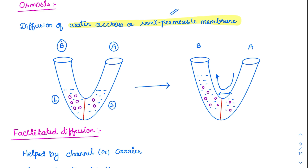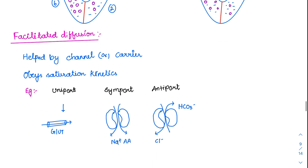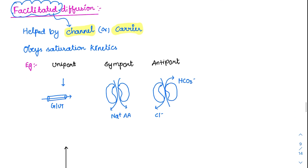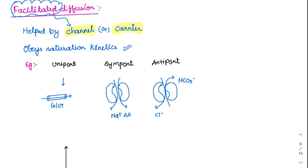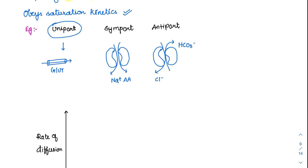This movement of water across a semi-permeable membrane is called osmosis. Facilitated diffusion is passive — facilitation means it is helped by channels or carriers, but no energy is needed. It obeys saturation kinetics. It is further classified into uniport (single molecule transported), symport (two or more molecules transported in the same direction), and antiport (movement in opposite directions), as seen in the chloride exchanger and sodium-amino acid transporters.